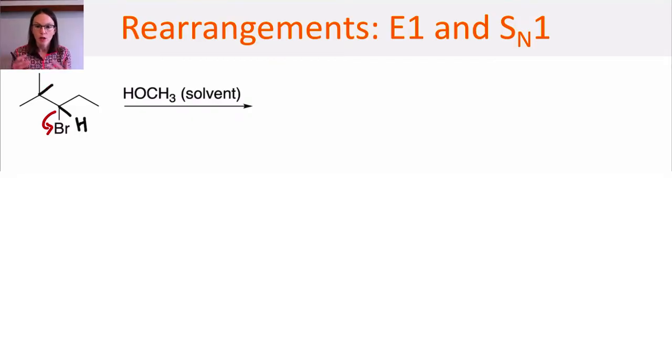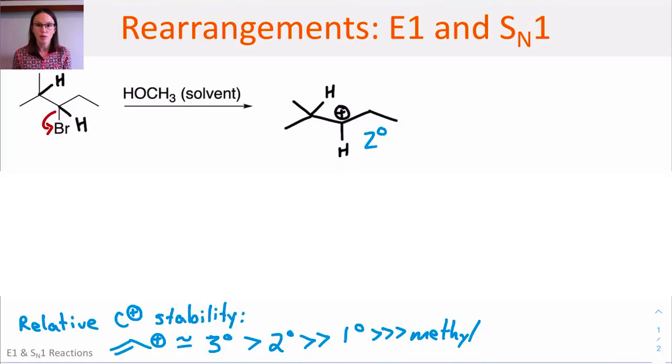Let's look at an example. In this case, we have a secondary alpha carbon, and if that carbon-leaving group bond breaks, we get to a secondary carbocation intermediate. That's one of the less stable ones. We know that resonance-stabilized or tertiary carbocation intermediates would be more stable. Here's where the rearrangement comes in.